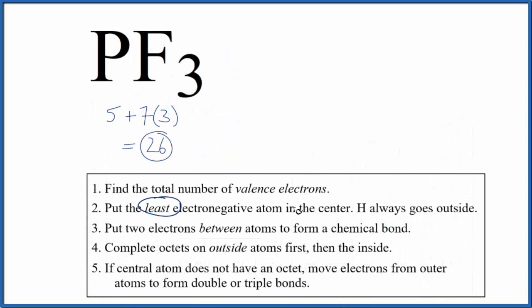We'll put the least electronegative atom in the center, that's going to be the phosphorus. So we'll put a phosphorus atom and we'll put three fluorine atoms around it.